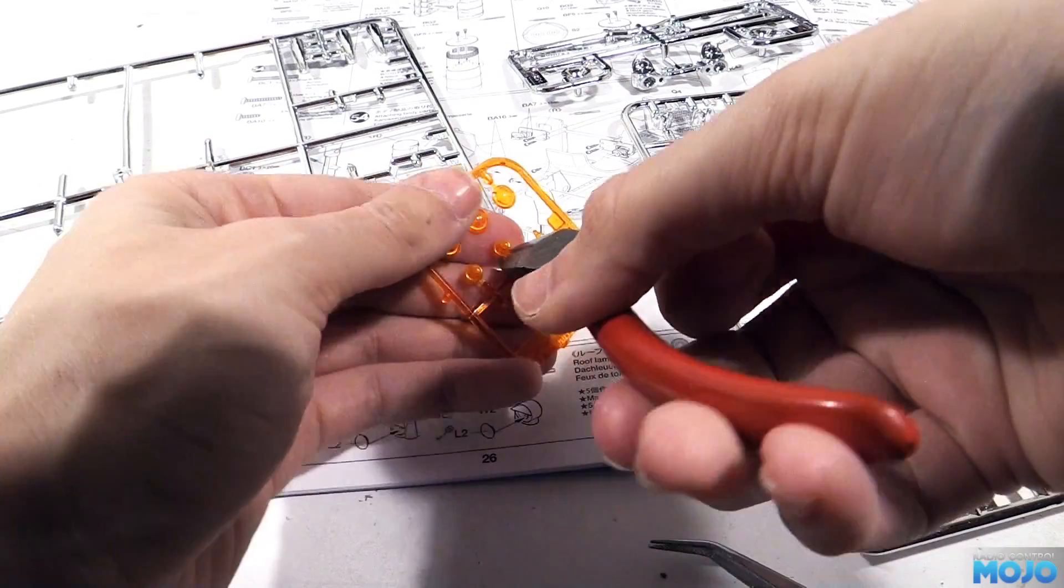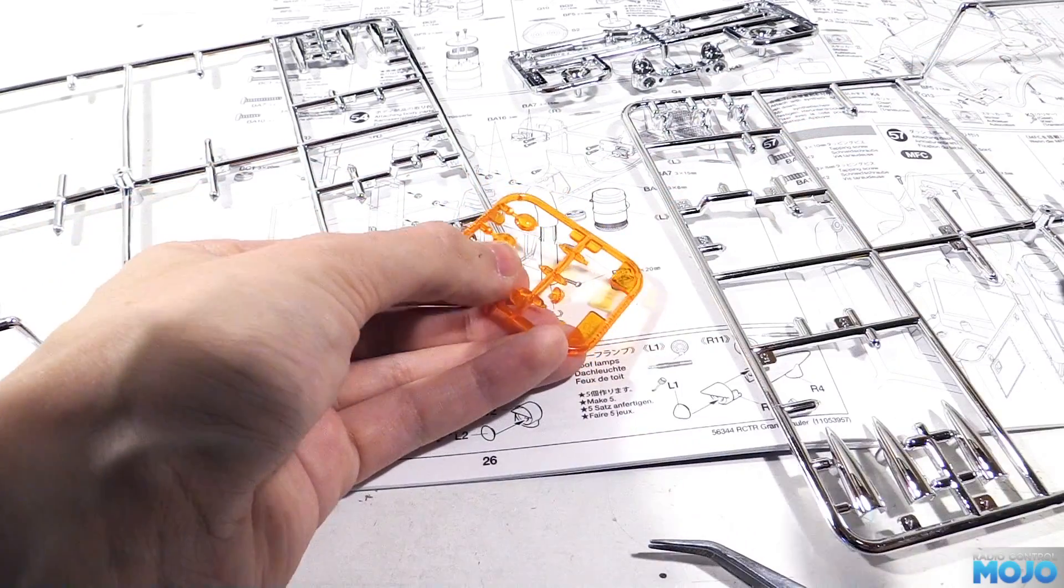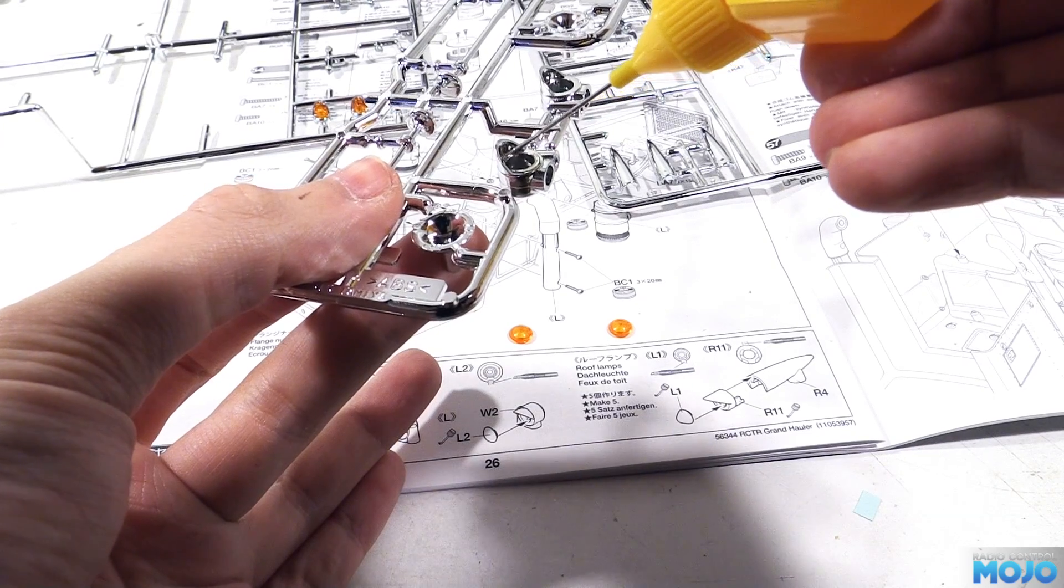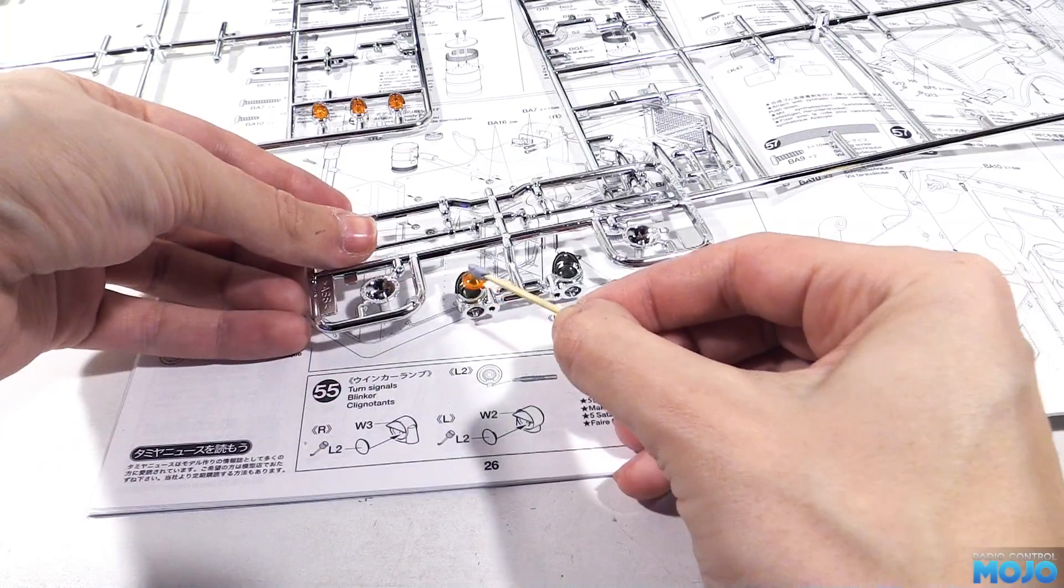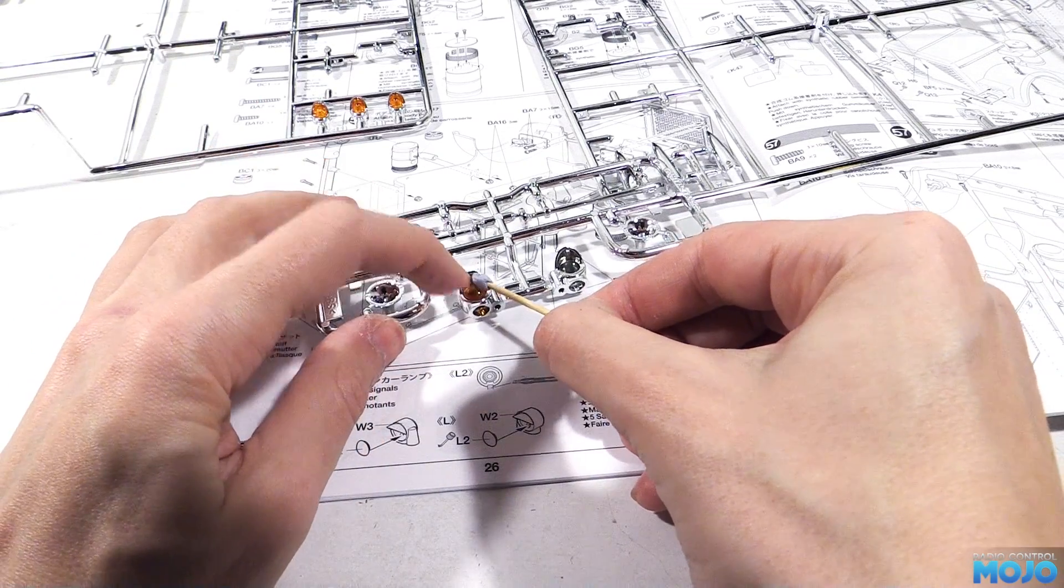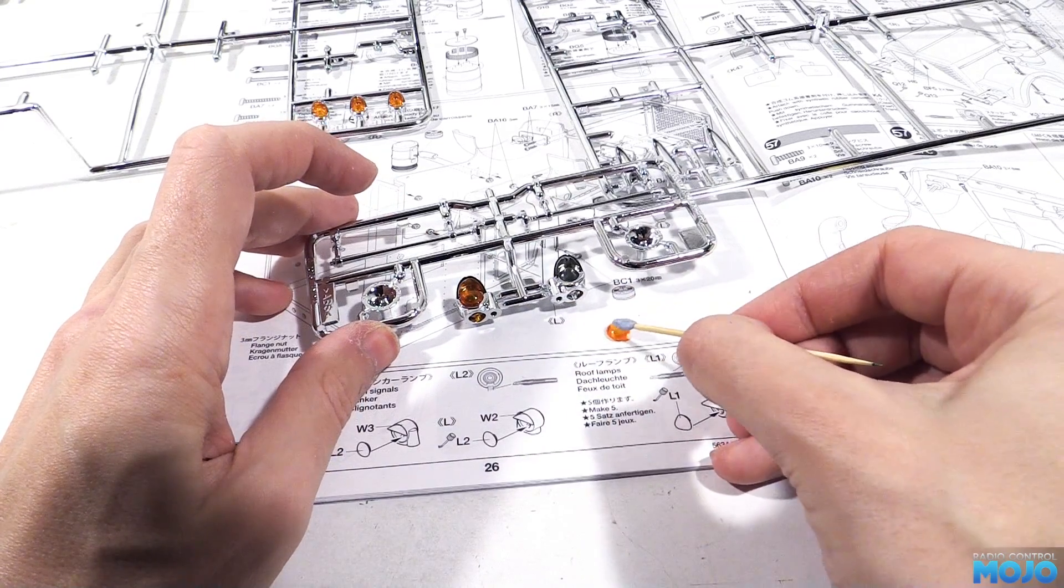Rinse and repeat for the rest of them. The truck only needs five of the lights, but we might as well do all six so we've got a spare ready just in case. The indicators go together in more or less the same way, except they use the larger orange lenses. That lot's going to take a good 20 minutes to become handleable, and it will be an overnight wait for them to fully harden up.